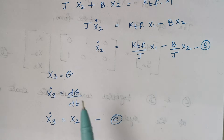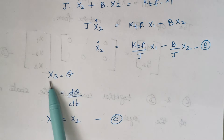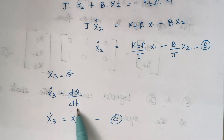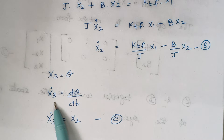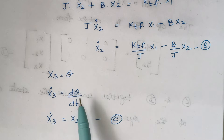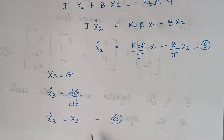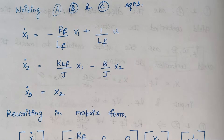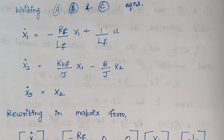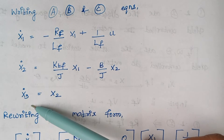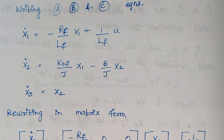Next, since X3 = theta, differentiating gives X3-dot = dθ/dt = X2. Mark this as Equation C. So we have framed expressions for X1-dot, X2-dot, and X3-dot.